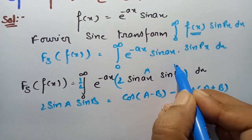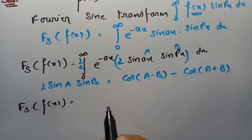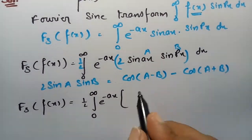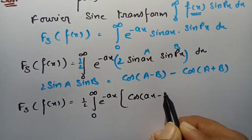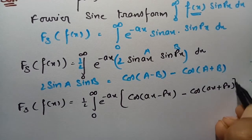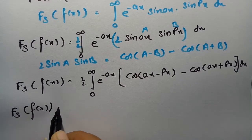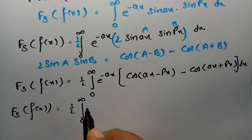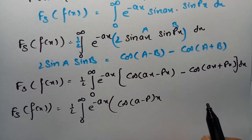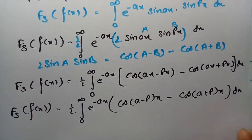Here a = ax and b = px. Substituting, the Fourier sine transform of f(x) equals one half times the integral from 0 to infinity of e^(-ax) · [cos(ax - px) - cos(ax + px)] dx. Taking x as common, this becomes cos((a - p)x) - cos((a + p)x).